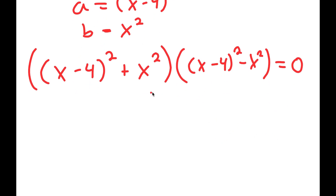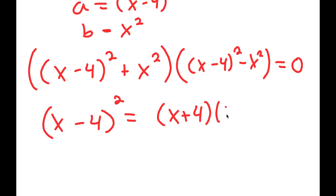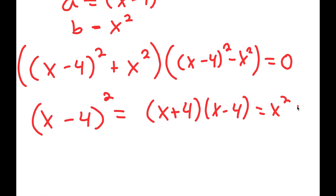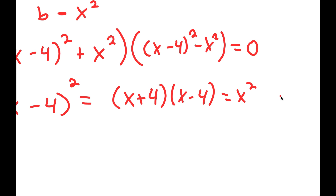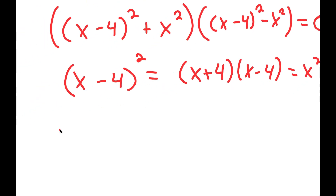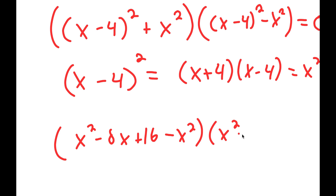Now from here, I'm going to expand this. So x minus 4 squared expands to x minus 4 times x minus 4, which is equal to x squared minus 8x plus 16.